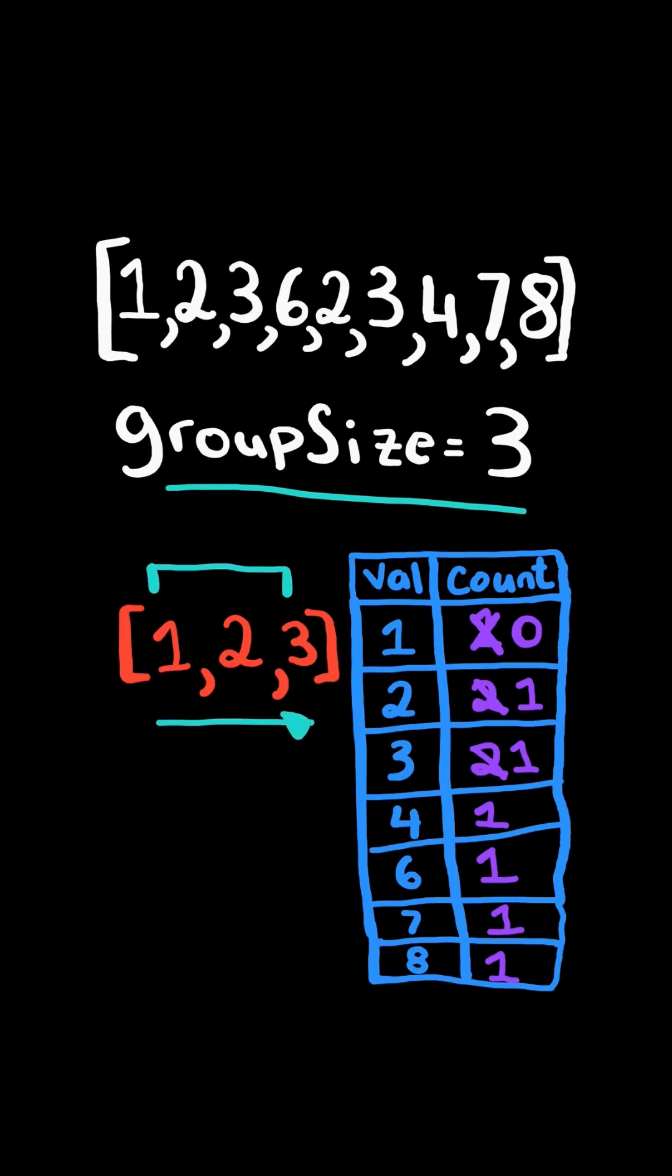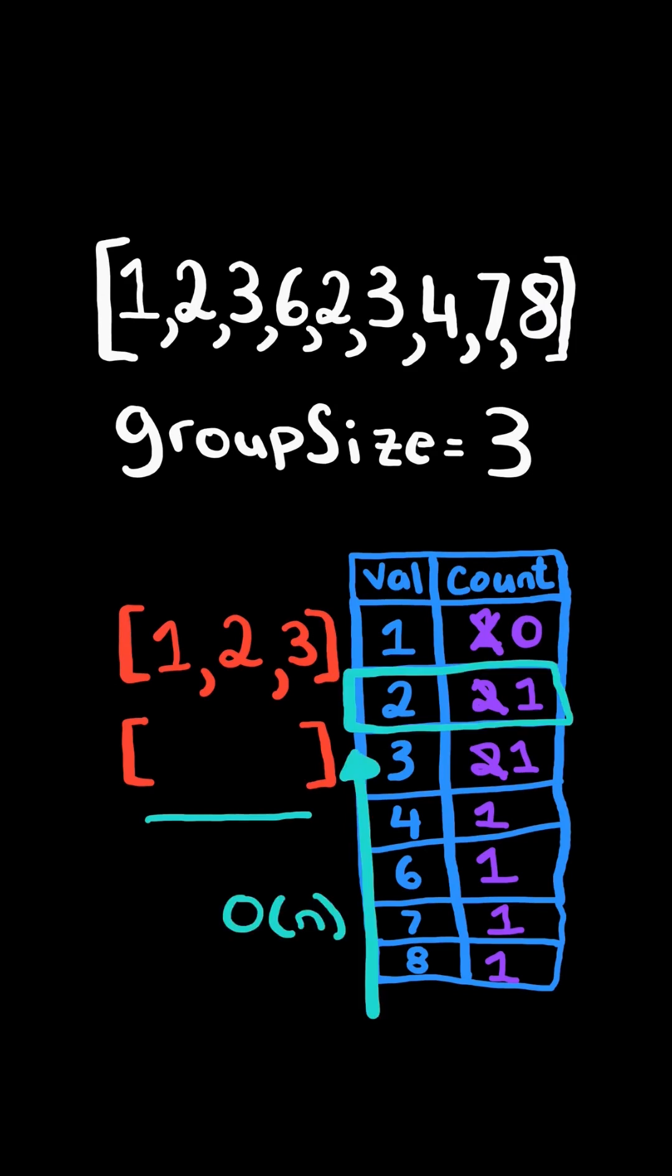So now we want to create another group. So we look at what's the next minimum value that has a count. But finding the minimum would take O of n time to scan through the map.